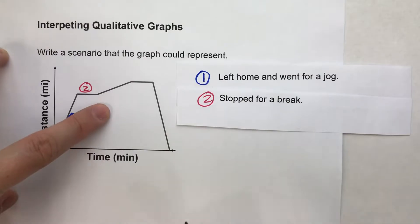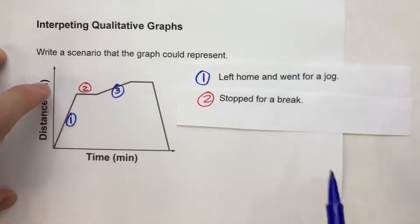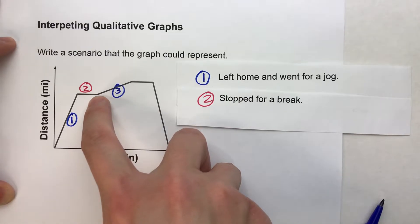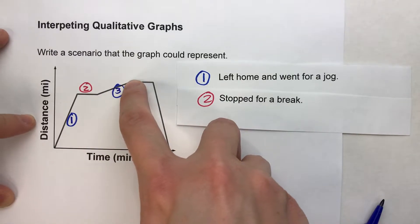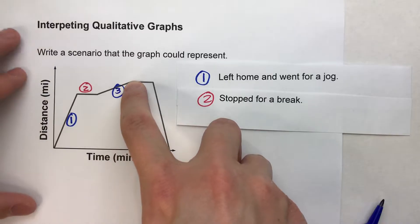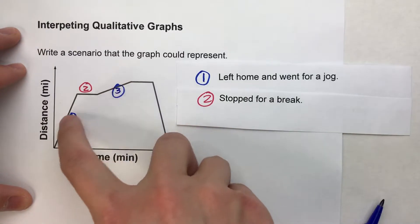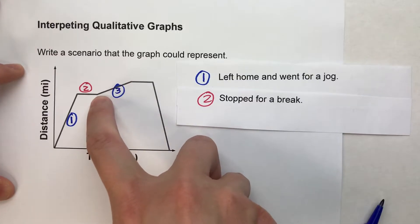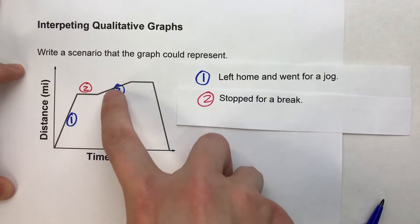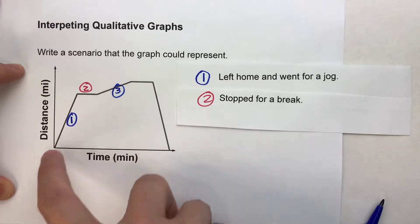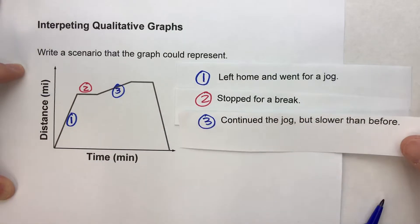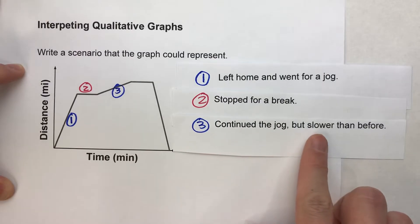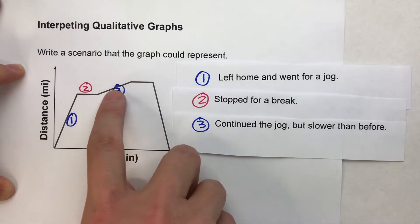Now in the third interval notice we're increasing again. So we are increasing our distance as the time progresses but notice it's a lot flatter than that first section. So although we're kind of continuing we're not going at the same rate as we were before. So we could say something like well we continue to jog but this time we're going slower than before. Maybe we're walking this time.